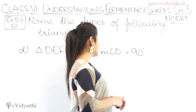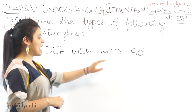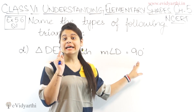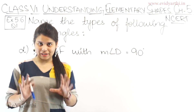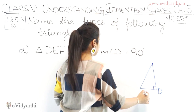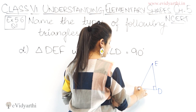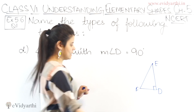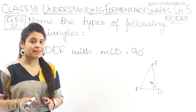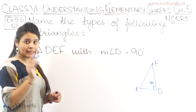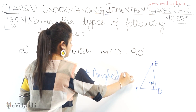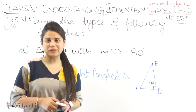Coming to part D, we have triangle DEF with measure of angle D = 90 degrees. Here we have an angle given — 90 degrees — which means a right angle. So if angle D is 90 degrees, this is a right angle triangle.